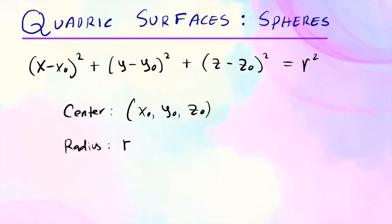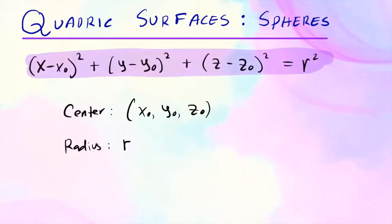Now we're going to look at quadric surfaces, more specifically spheres. Spheres are special types of ellipses — we'll talk about that a little bit later, but let's focus on spheres. The standard form of a sphere looks like this. We call these quadric surfaces because each variable has degree 2: x has degree 2, y also degree 2, and z as well.